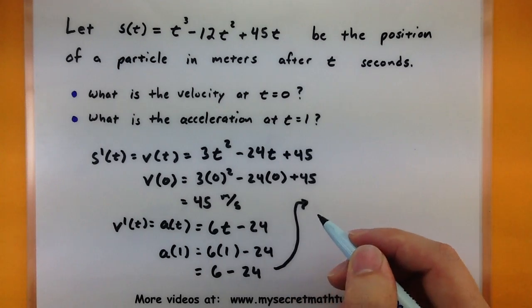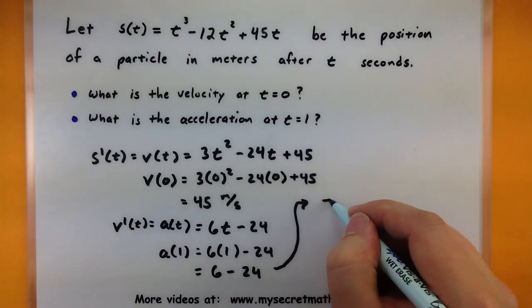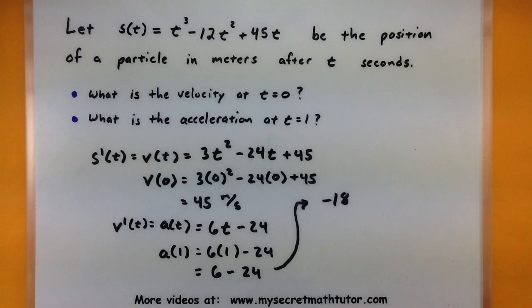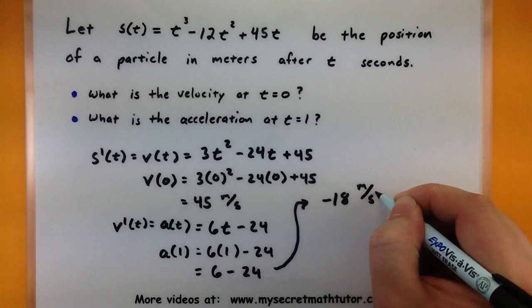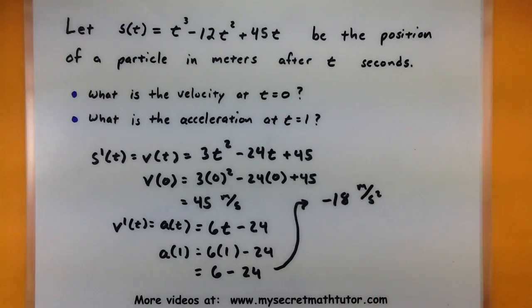Let's go ahead and write this up here. Negative 18. And I'll label this in meters per second squared. So this is our acceleration. Let's see if we can answer just a few more questions about this particle.